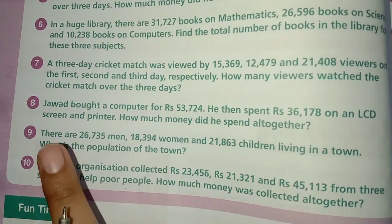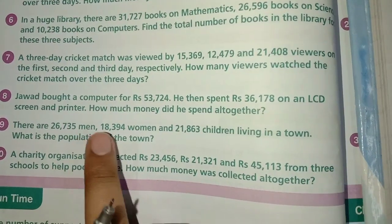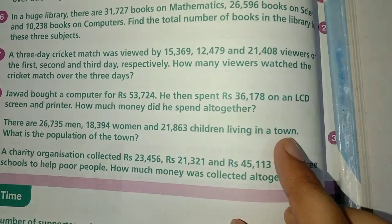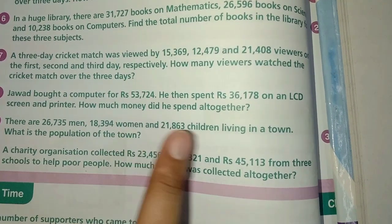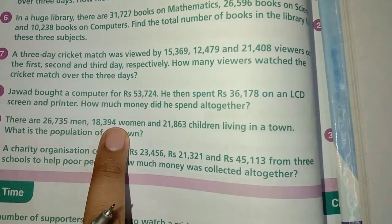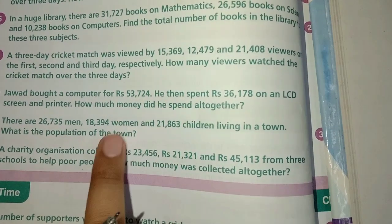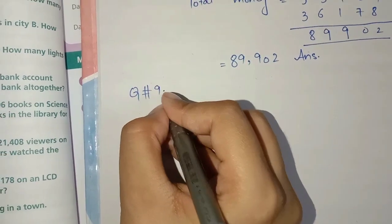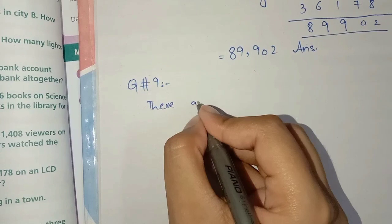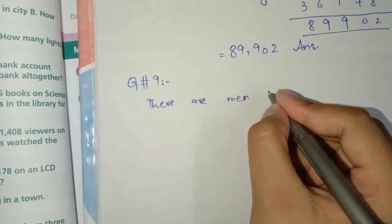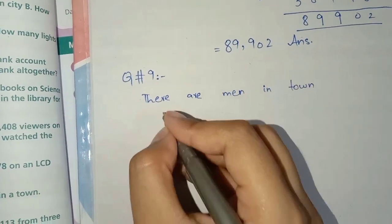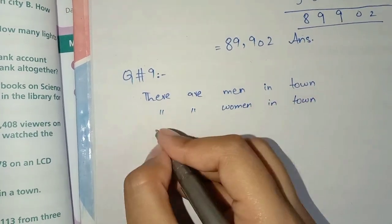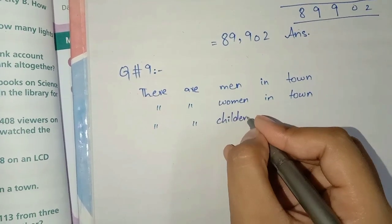Next question number 9: There are 26,735 men, 18,394 women, and 21,863 children living in a town. What is the population of the town? Ek town mein itne aadmi rehte hain, itni auraten hain, aur itne bachche hain. Ab unhe add karke total population batani hai.